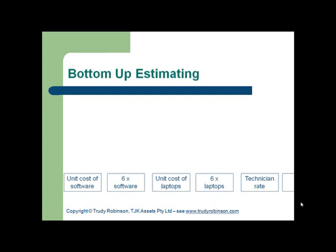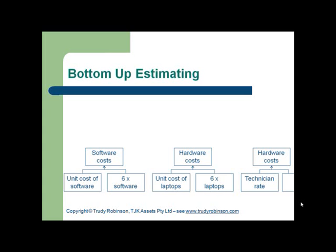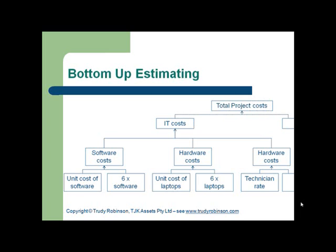One method of estimating is bottom-up. Even though it's the most time-consuming, it can be the most accurate. This is where you estimate the cost right at the lowest level of detail available within the project, then accumulate it into groups of costs until it relates to the total project.